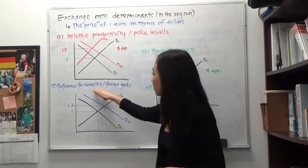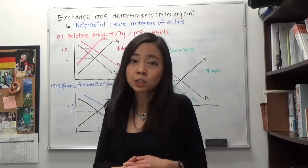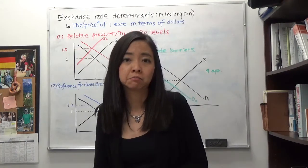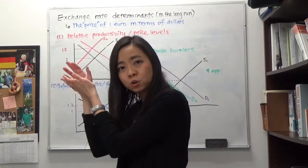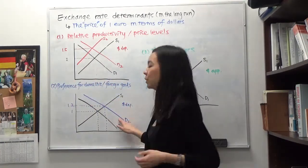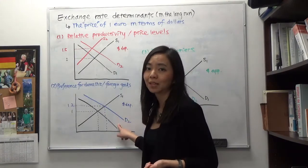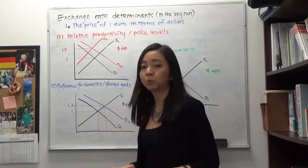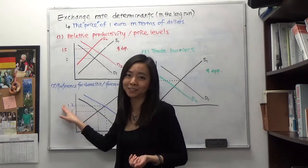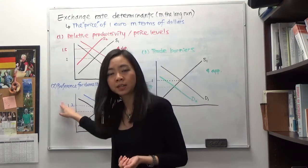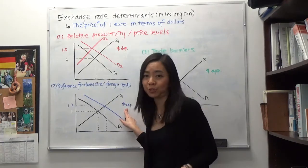And the second factor is preference for domestic and foreign goods. So for example, suppose all of a sudden we prefer to drink French wine and we also prefer German beer than our local wine and beer. Then in order to buy European wine, European beer, our demand for the euro is going to increase. So that will shift our demand for euro from D1 to D2. And therefore at equilibrium, you can see the price of one euro in terms of the dollar has increased from $1 to $1.20. And therefore, the dollar has lost its value because now it takes more dollar to buy one euro. And therefore, we say the dollar has depreciated.